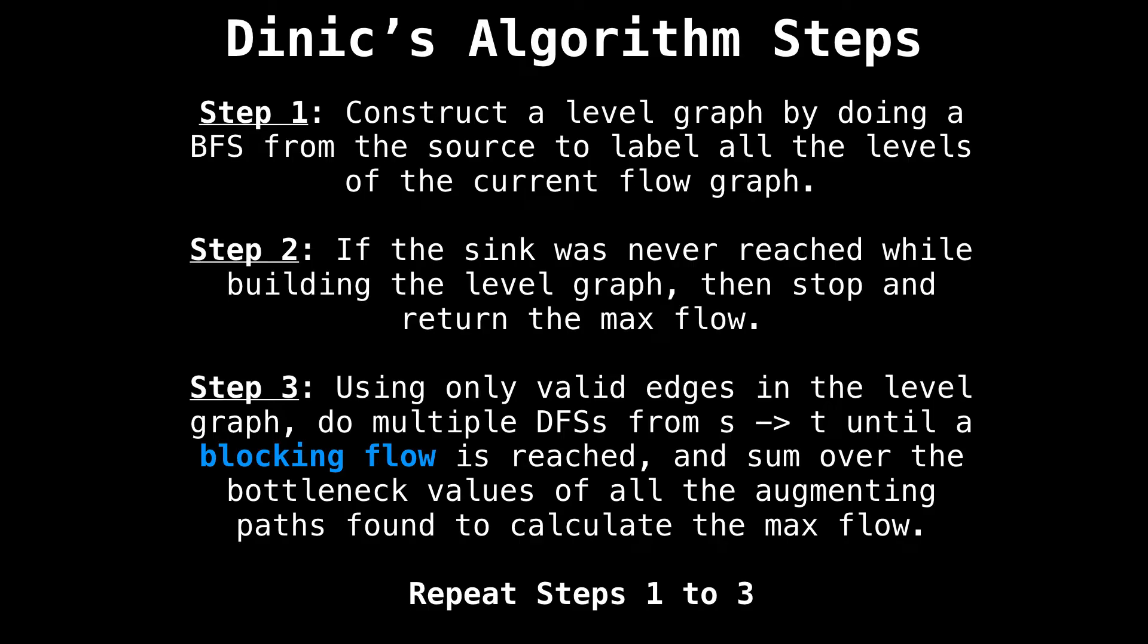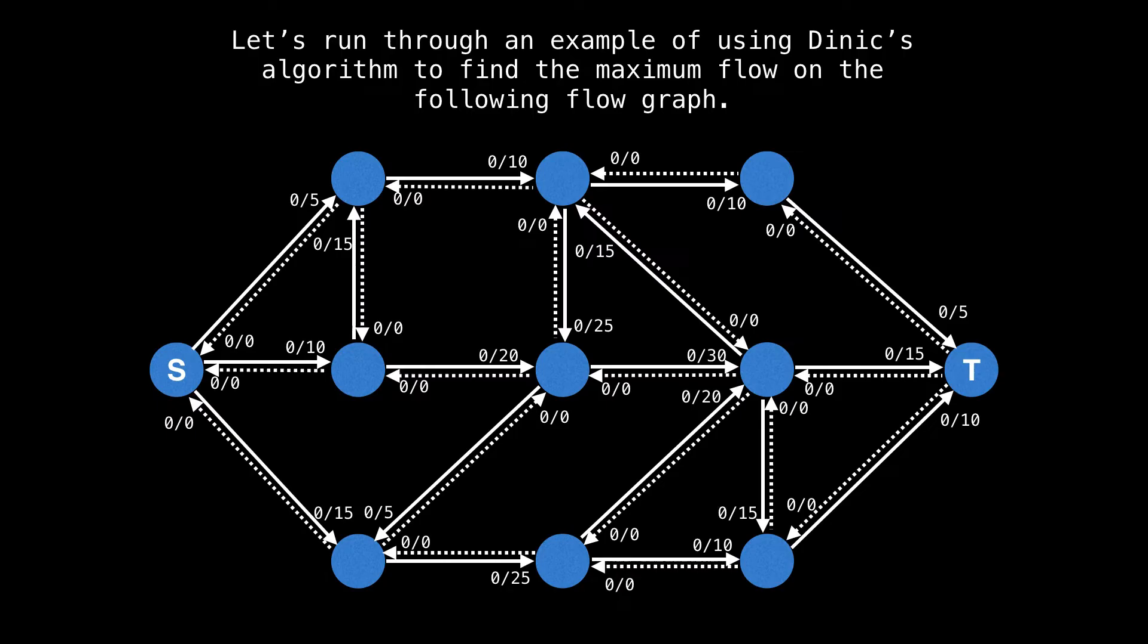A blocking flow is when we cannot find any more paths from the source to the sink because too many edges in the level graph have been saturated. This will all become clear with an example. Let's use Dinic's algorithm to find the maximum flow of this flow graph. If this were a bipartite graph, we would also be able to get a maximum matching as a result.